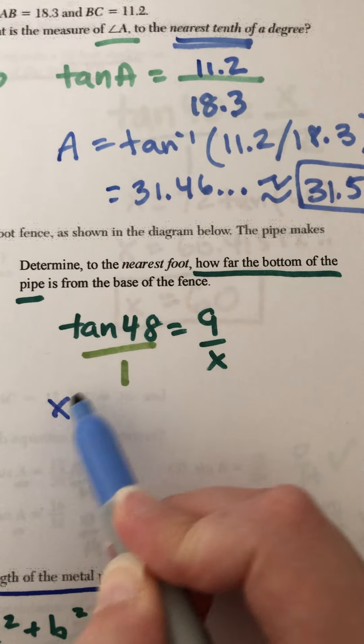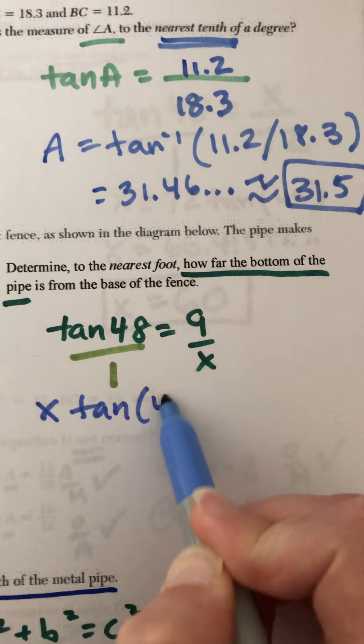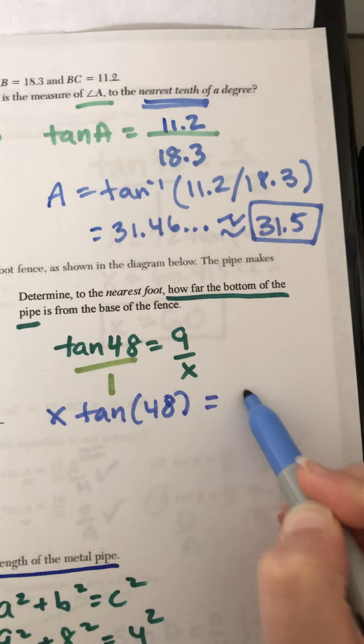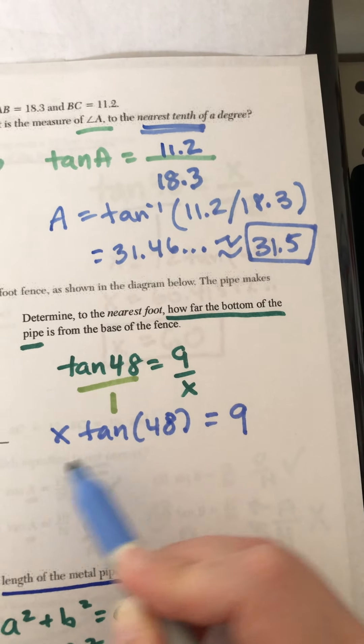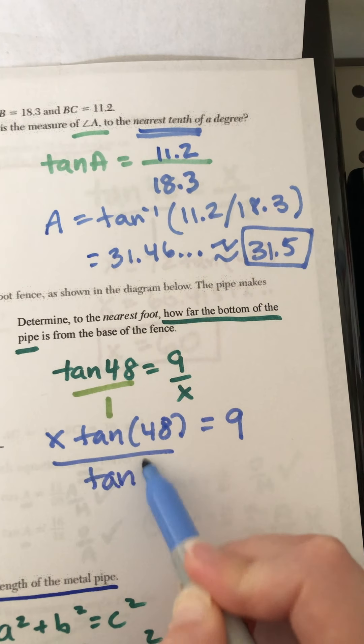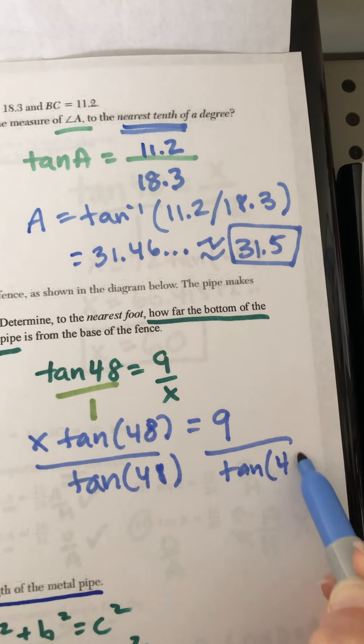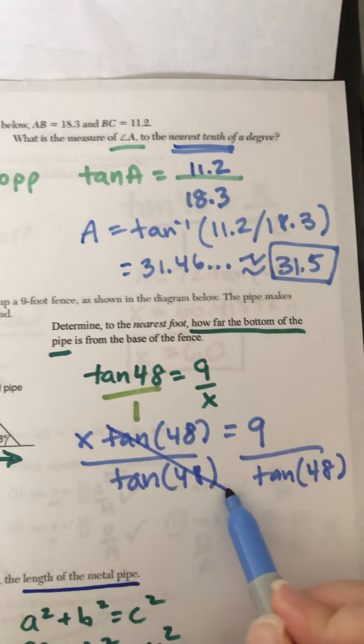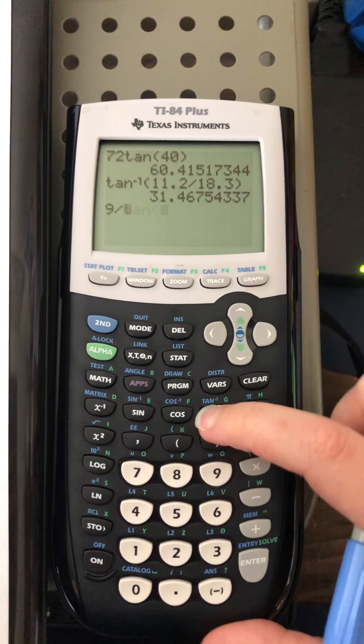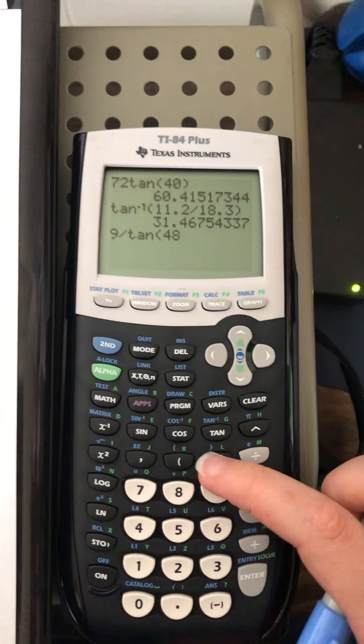We cross multiply X, tan 48. 9 times 1 is 9. We want to get the X by itself. So get rid of the tan 48 with division. When you divide that out, X is, well, let's see, 9 divided by tan, a lot of tangents in this homework, 48.